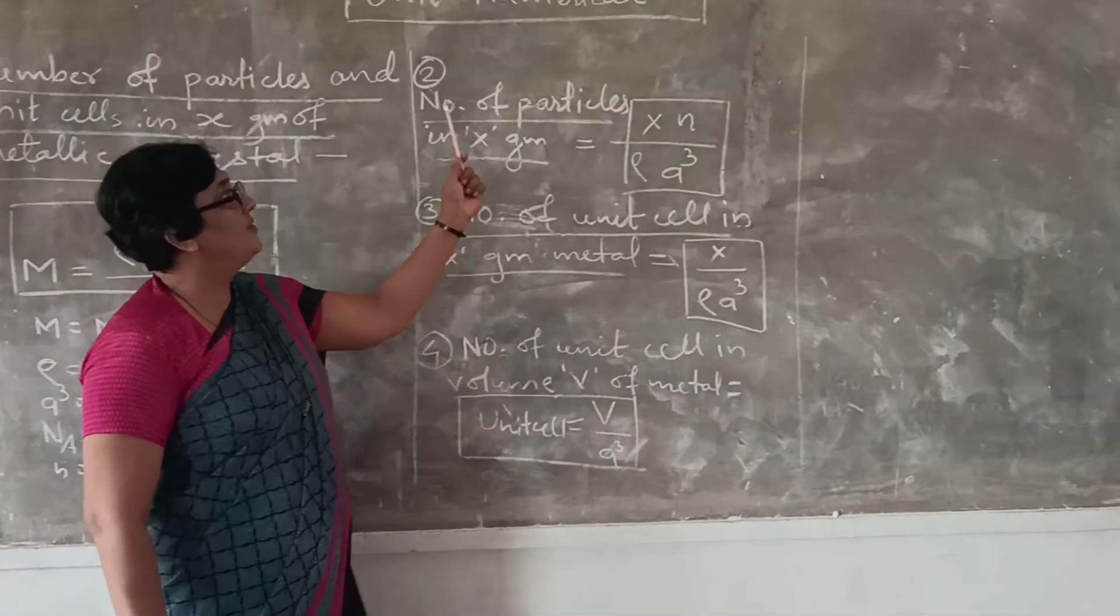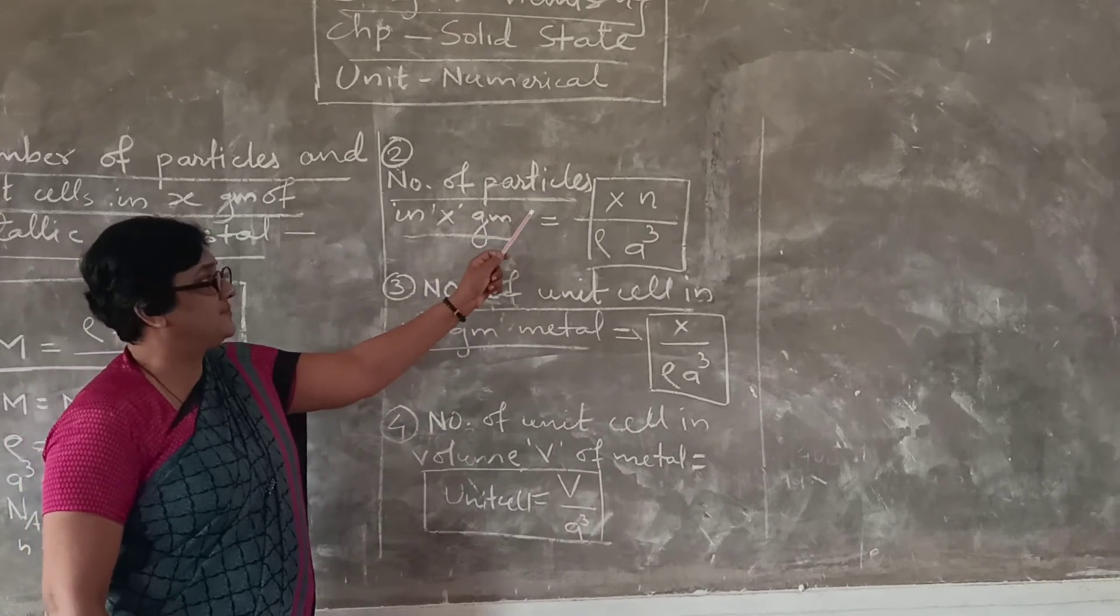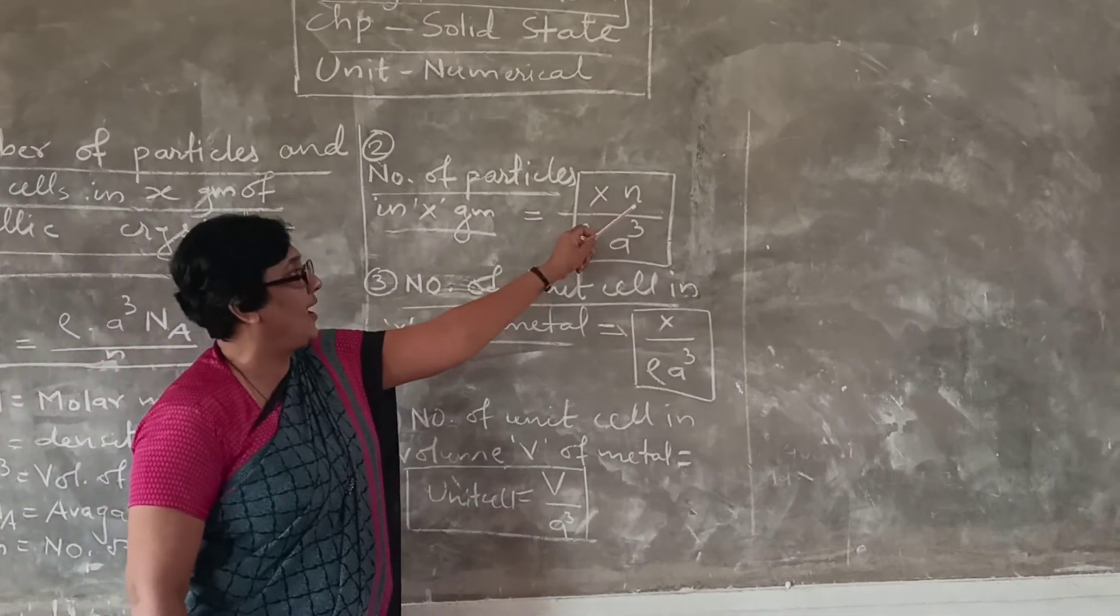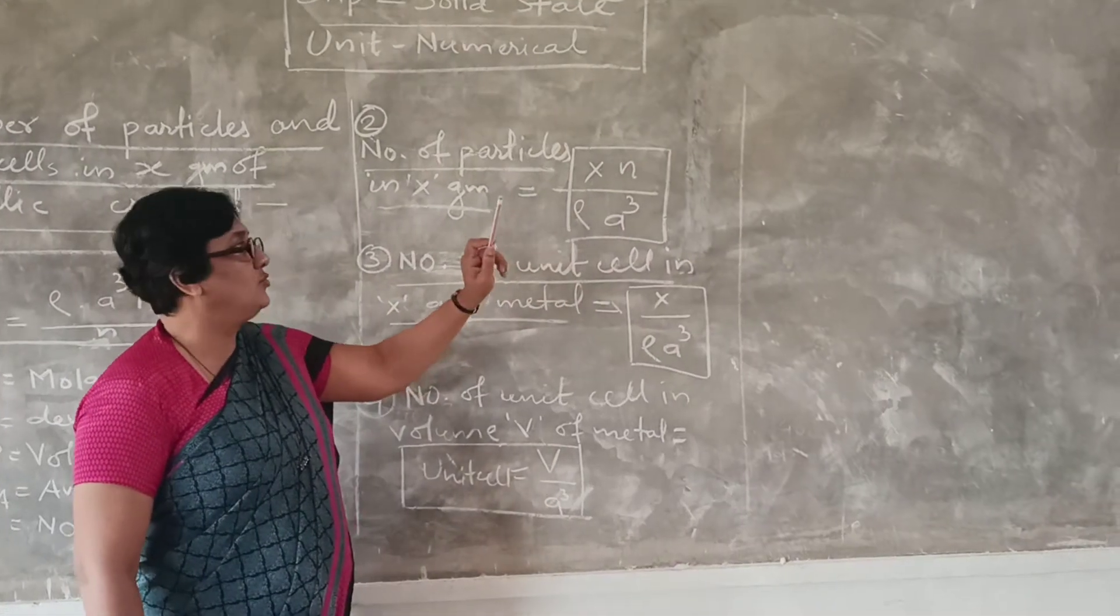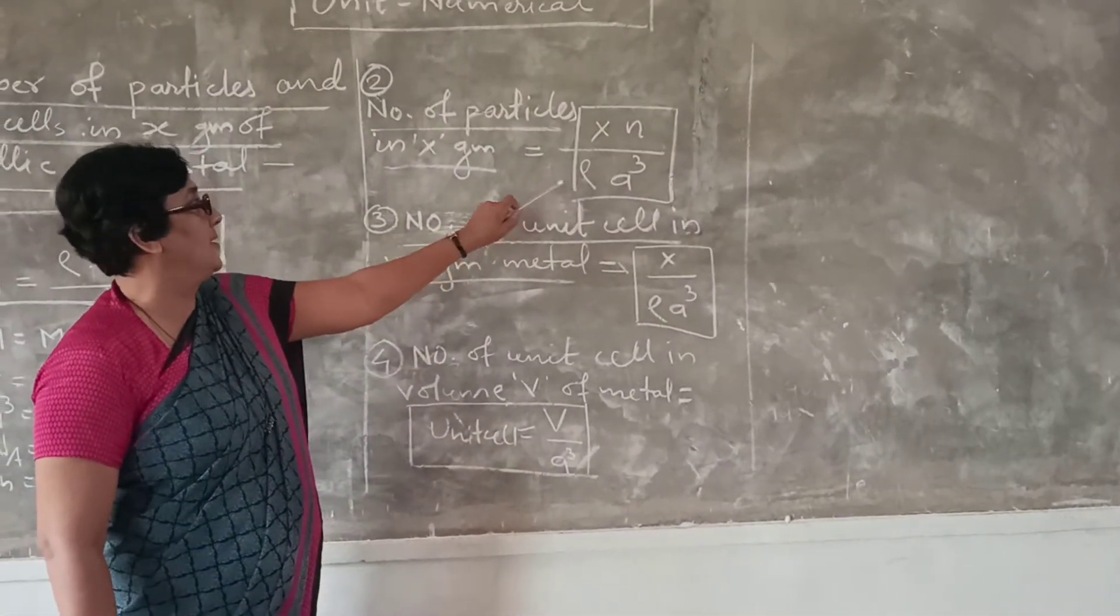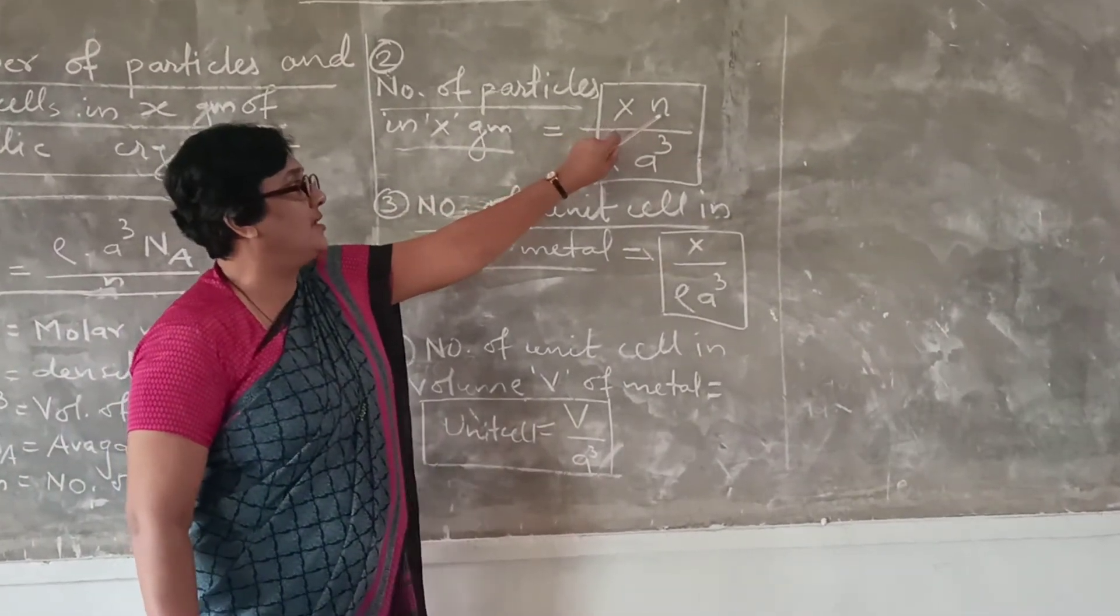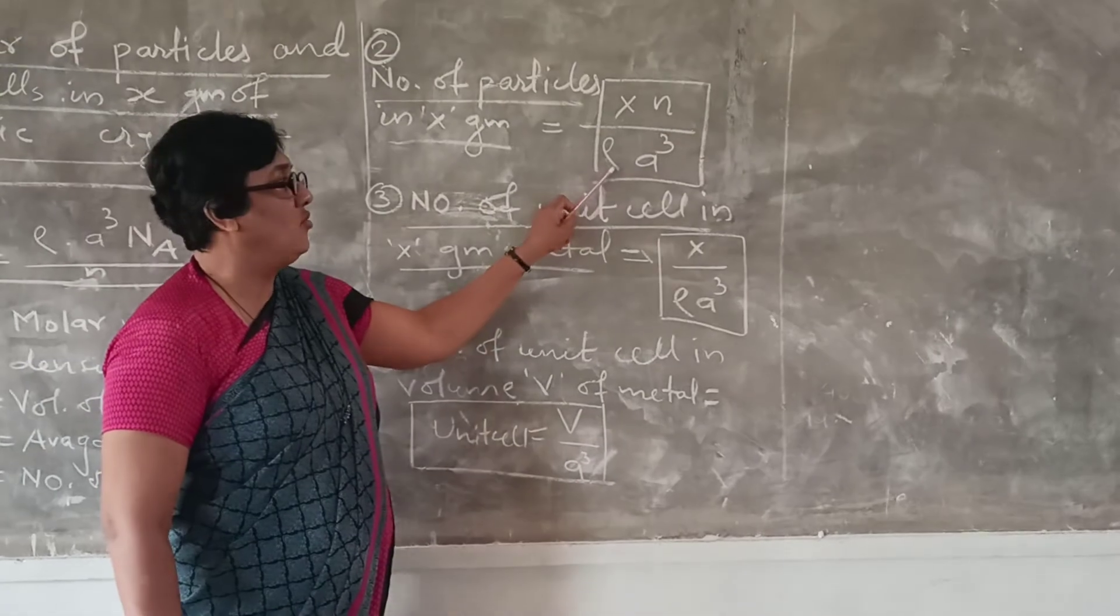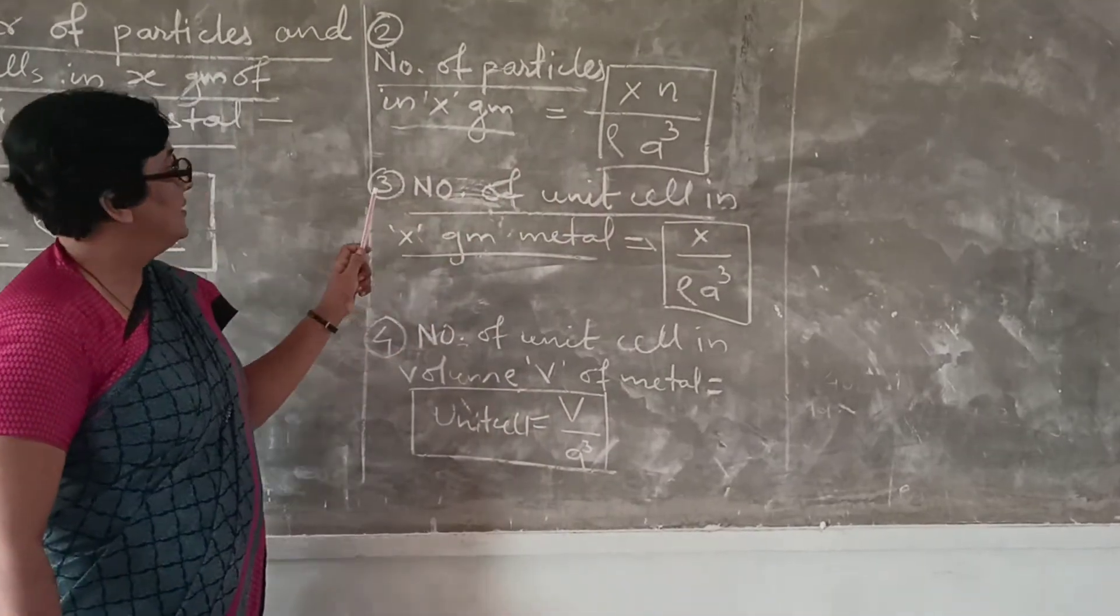Second, calculation of number of particles in x gram of this substance is equal to x into N divided by rho into A cube. Again, you have to remember and learn this formula. x gram means here x into N number of particles divided by rho density into A cube, volume of the unit cell.